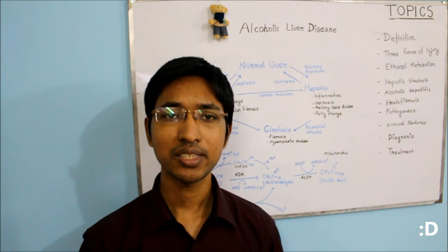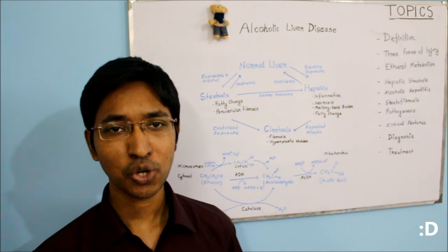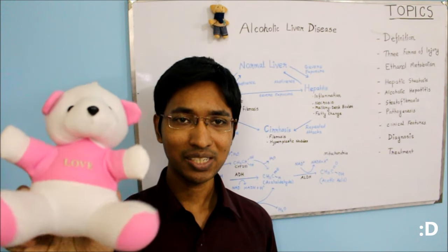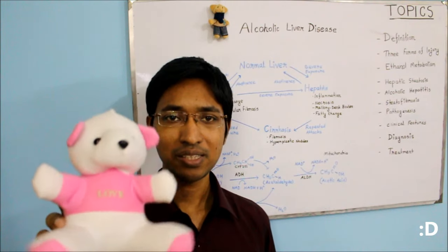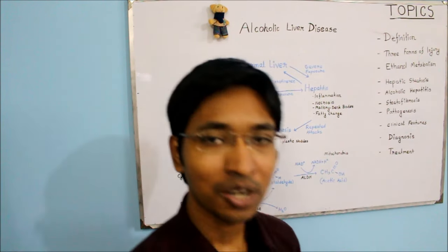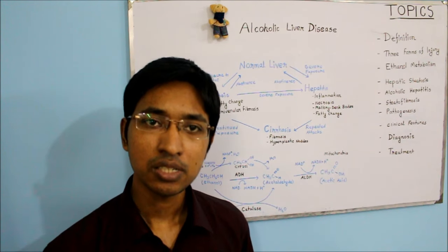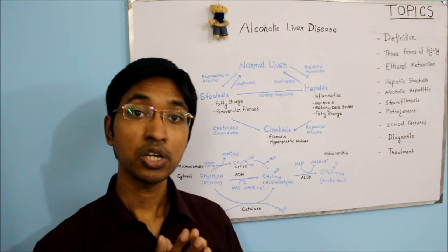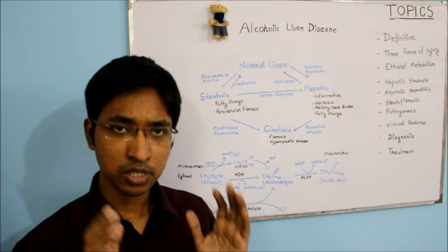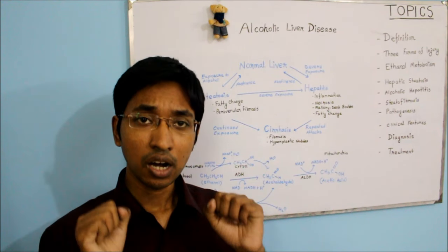I hope you're still with me — you didn't run away just like my students do when I try to teach them definitions of pathology. I even have to show them a teddy bear to keep them calm. So I will try to explain this definition line by line. In the first line: alcoholic liver disease is used to describe a spectrum of liver injury. Here, spectrum denotes a range of disease.